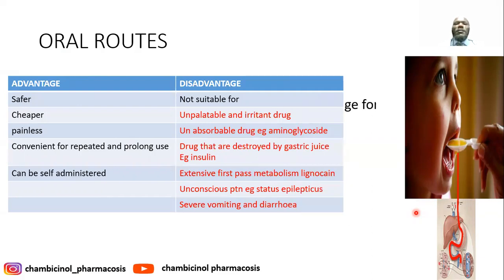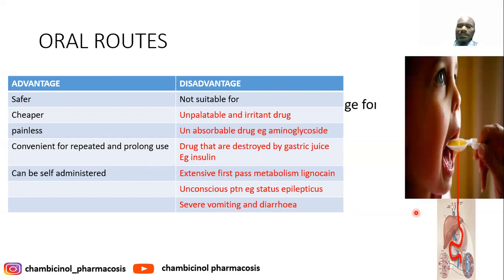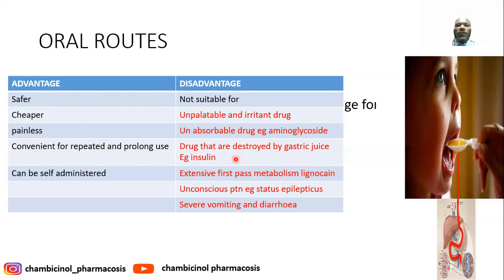Disadvantages of oral route: not suitable for unpalatable or irritant drugs, as they can cause nausea, vomiting, and irritation of the mucous membrane — potentially leading to peptic ulcer disease. Some drugs are not absorbed orally, such as aminoglycosides like gentamicin and neomycin, and neostigmine — these are water-soluble and cannot be taken orally because absorption is not possible.